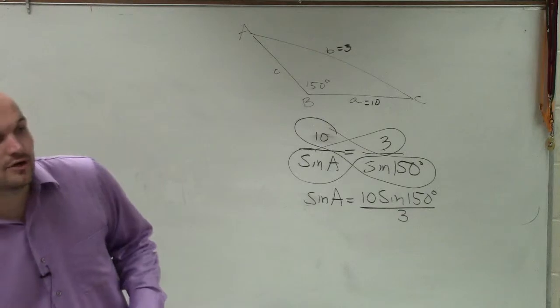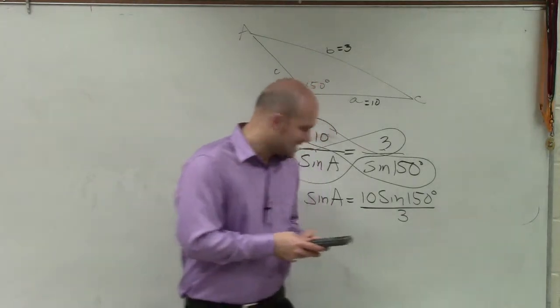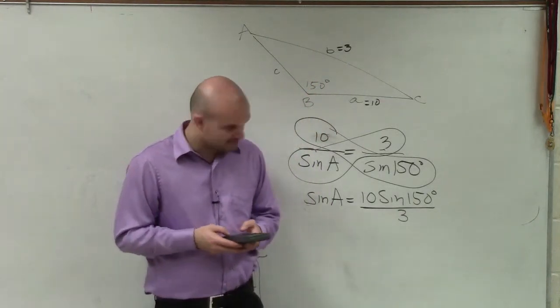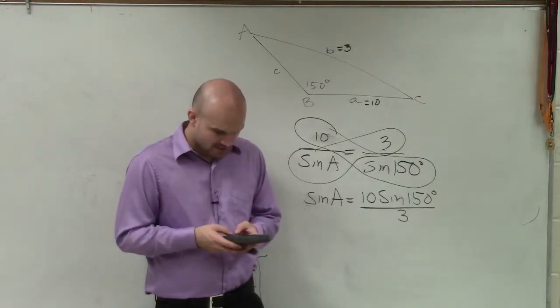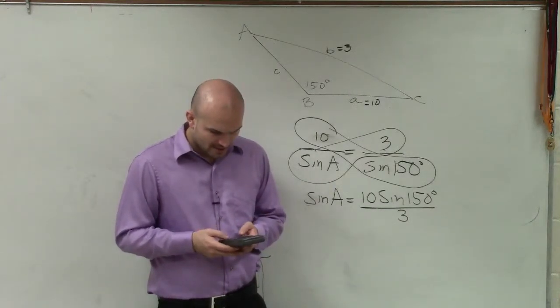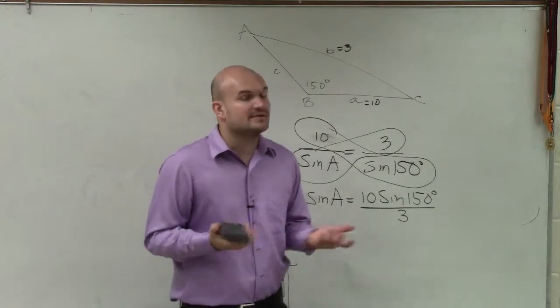So now I go to my calculator. And to solve for this one, I type in 10 times the sine of 150, and I divide it by 3.